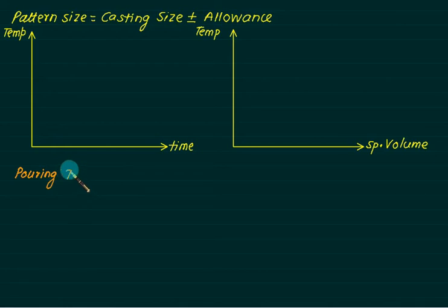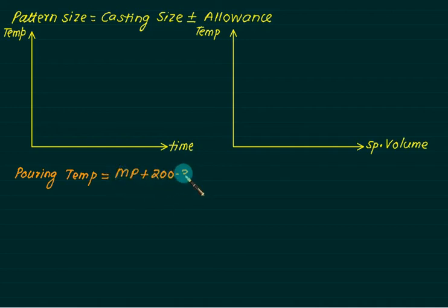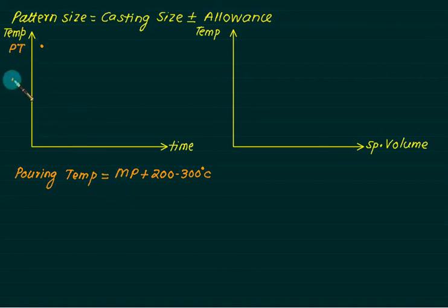Pouring temperature is normally more than melting temperature by 200 to 300 degrees Celsius — that extra amount is called superheat. So we have melting point plus an extra 200 to 300 degrees Celsius. On our diagram, the pouring temperature is at the top and the melting point is somewhere below it.